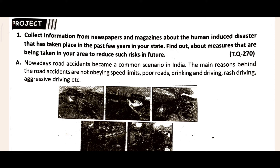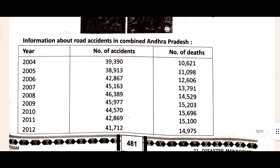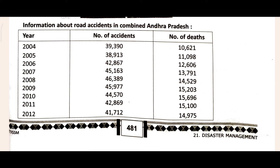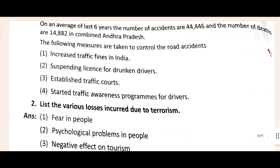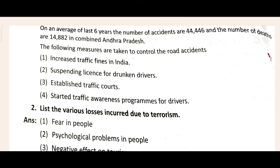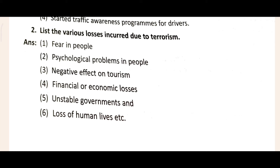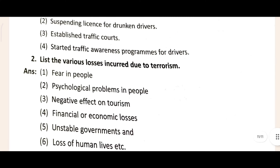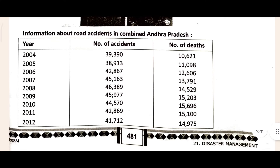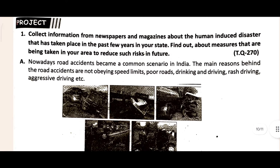Project work: the first question and answer is shown here. The second project work answer lists the various losses incurred due to disasters: fear in the people, negative tourism, loss of human life, and loss of trust. The project work is now complete. Everything in this chapter — important points, keywords, question-answers, and project work — is totally completed. We will meet in the next video. Jai Hind!